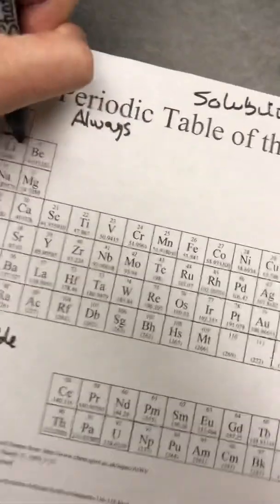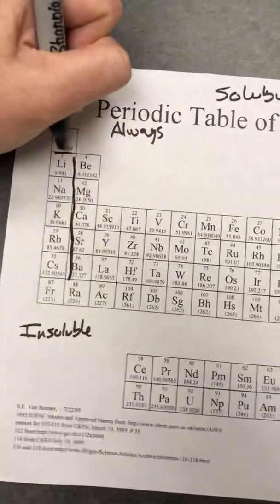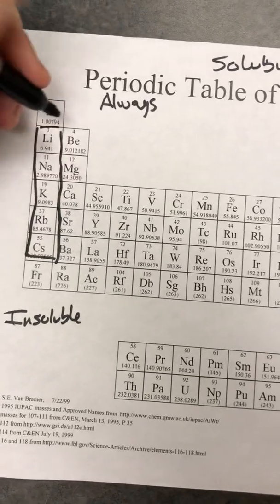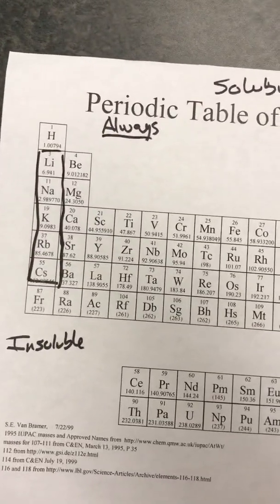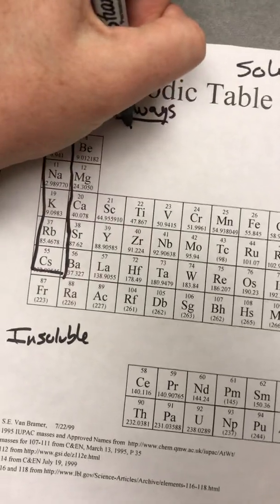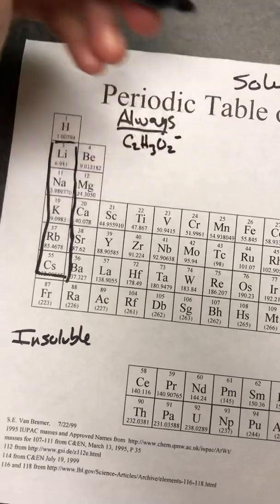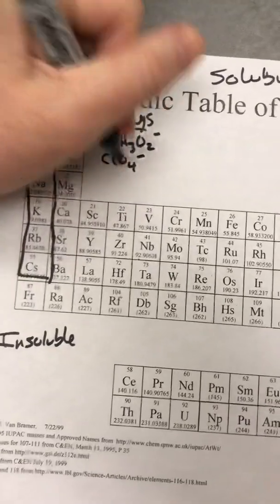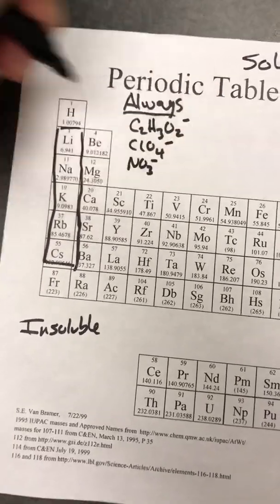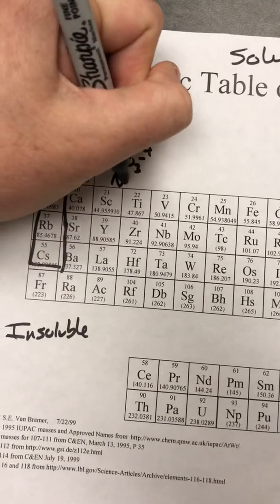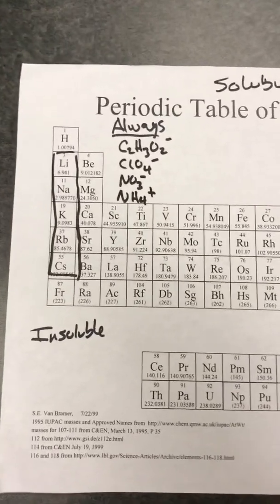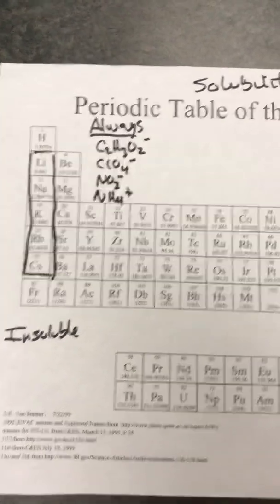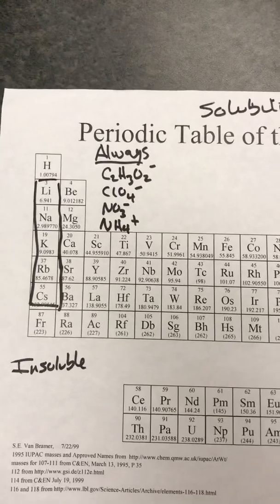So always soluble things are this first column right here. These are going to be always soluble, and in addition there's a few things I want you to try to remember. CHO, ClO, NO, NAH. CHO, C2H3O2 minus. ClO, ClO4 minus perchlorate. NO, NO3 minus, NAH, NH4 plus. Another student pointed out that this is CNN, and then we got an extra C. So C, CNN. However you're going to memorize it, these things are always soluble. No exceptions.